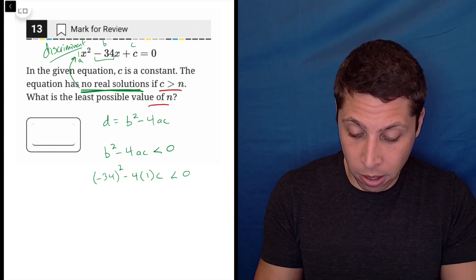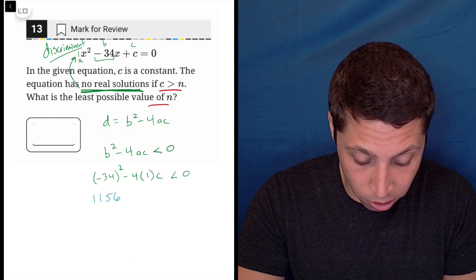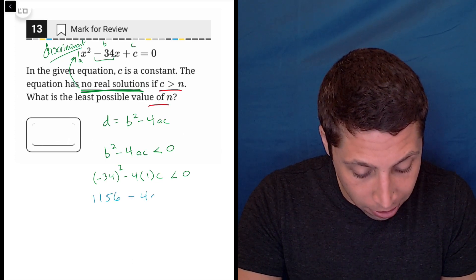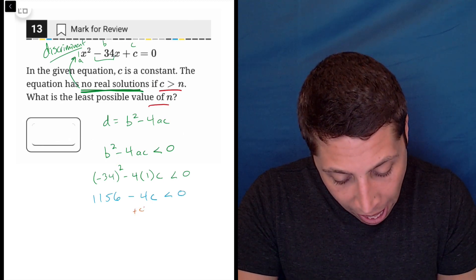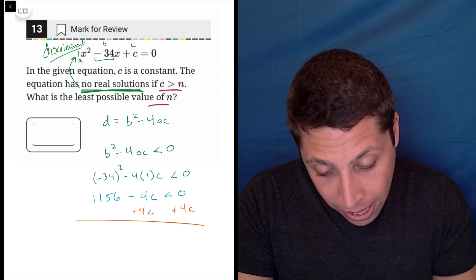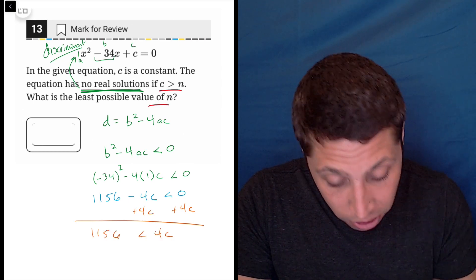So negative 34 squared, 34 squared is 1,156. This is minus 4c is less than zero. At that point, I would add 4c to both sides so that I don't have to worry about a negative. So 1,156 is less than 4c.